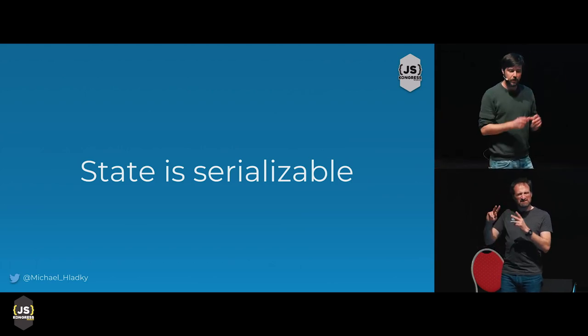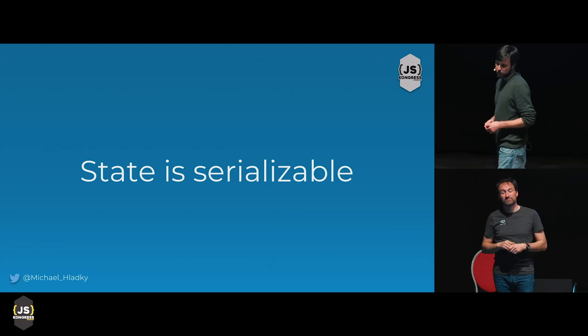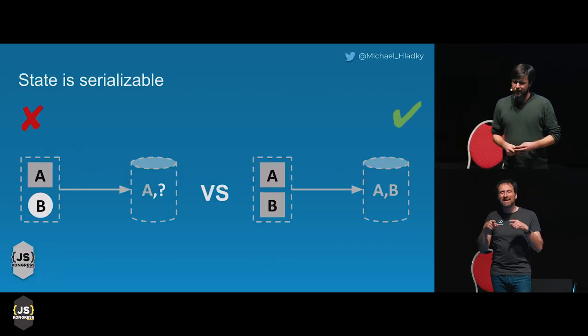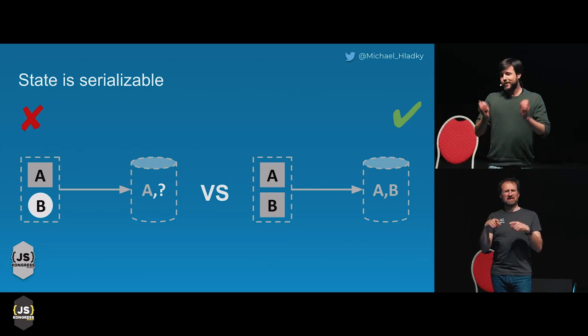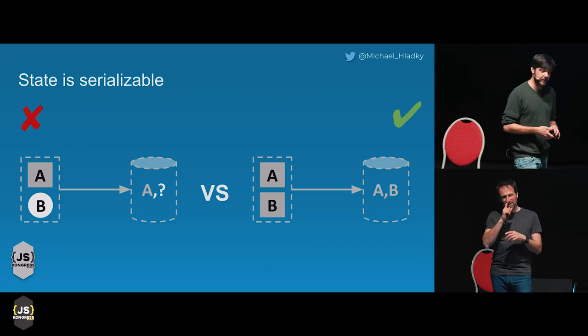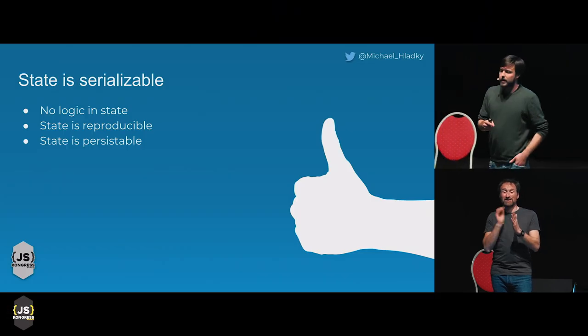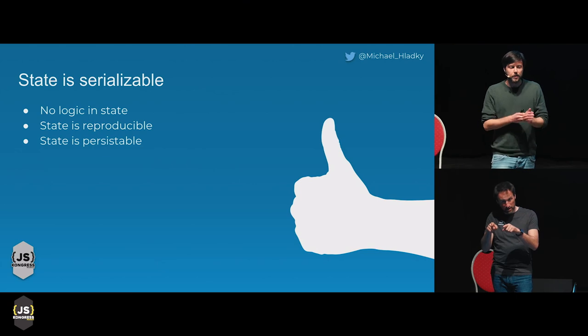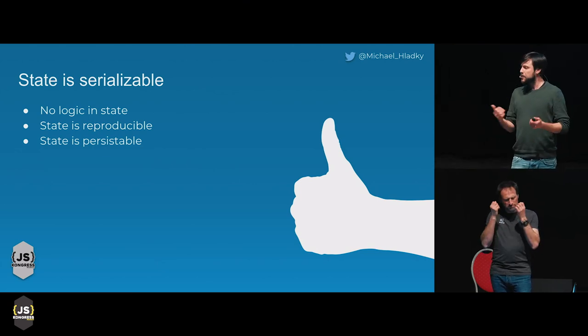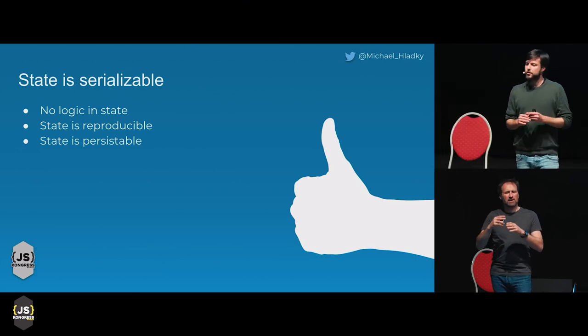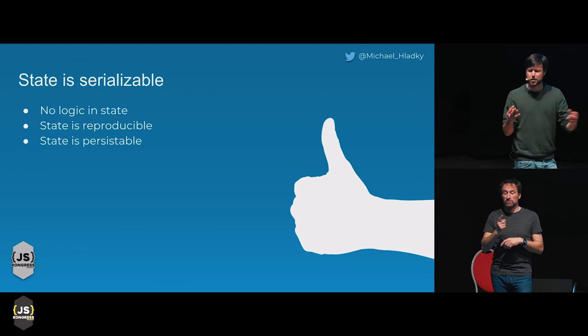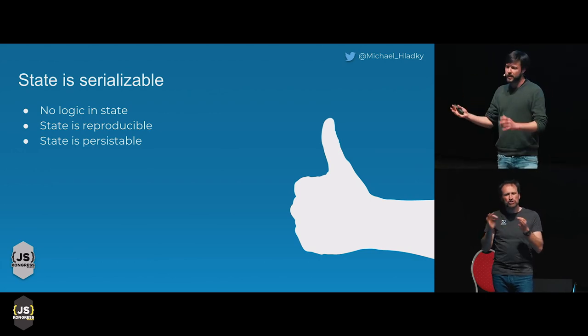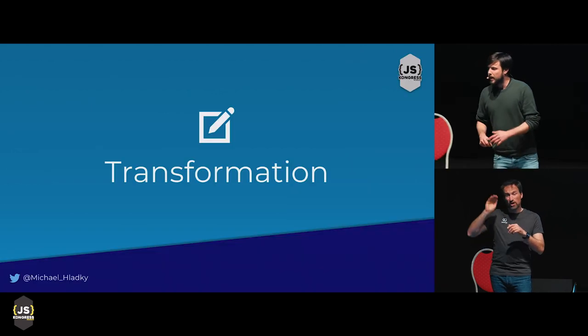The last part of the first chapter is: state is serializable. What do I mean with serializable? Any object that you can JSON.stringify — we are in a JavaScript context — is serializable. You should really take care that you only store serializable data. Why is this so important? If you store data serialized, it's not very hard to make your state persistent. It helps you keep your state reproducible, and you also store no logic in this state — no functions, no objects, nothing that could get mutated from outside.